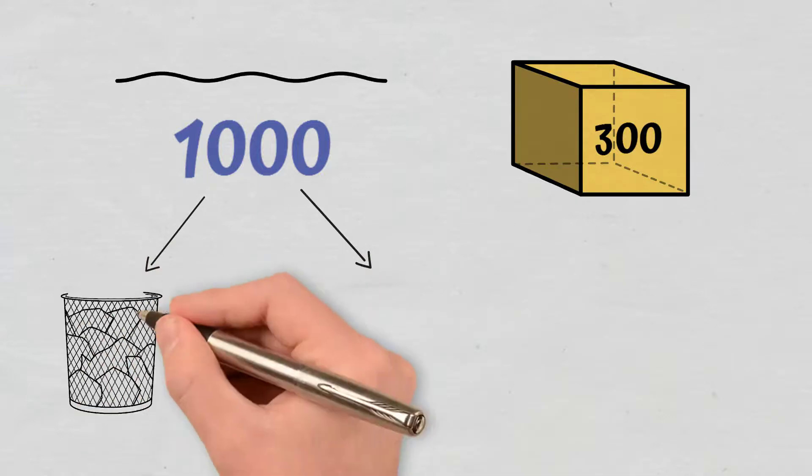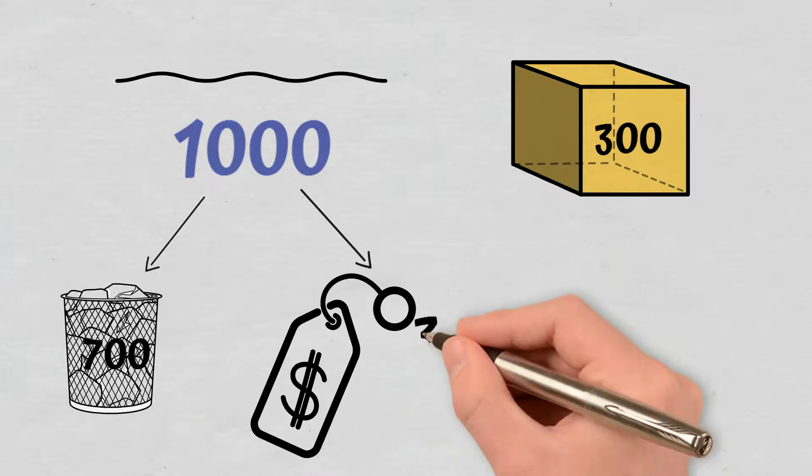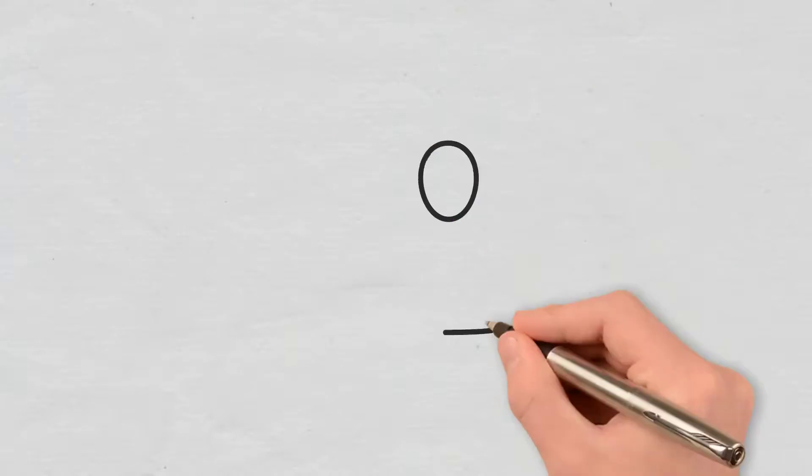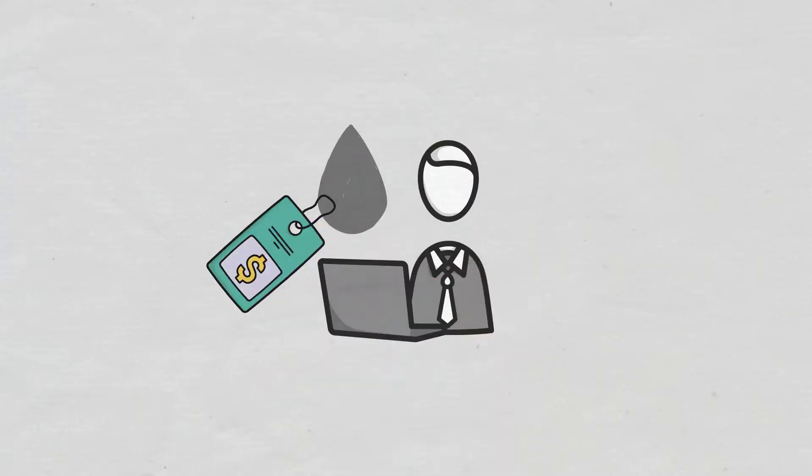then miners will prefer to sort out of the 1,000 transactions only 300 to validate and will select the ones that are the most profitable for them. Therefore, users who want their transactions to have more chances to be validated have to pay more gas so that they surpass the others.